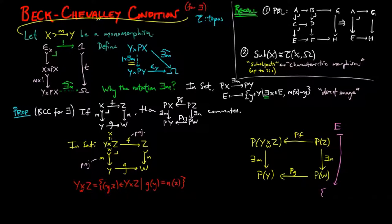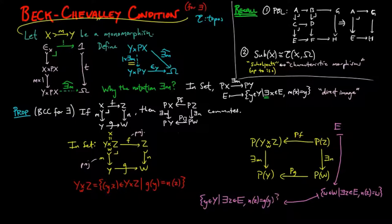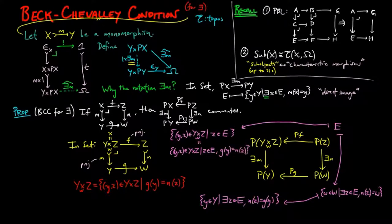Taking a subset E of Z, the direct image of n is the set of little w in W such that there exists a z in E with n(z) equal to w. The inverse image of g of this set is the set of little y in Y such that there exists a z in E with n(z) equal to g(y). Meanwhile, the inverse image of f of E is the set of pairs (little y, little z) in the fiber product such that z is in E, equivalently the set of pairs in Y cross Z such that z is in E and n(z) equals g(y).